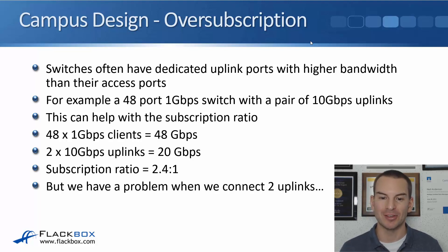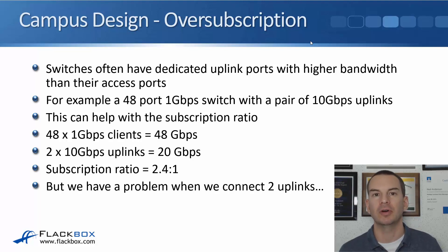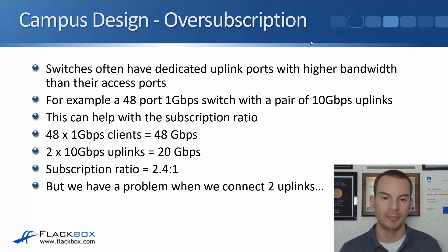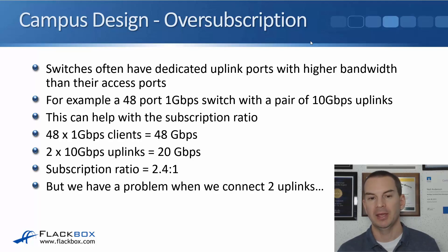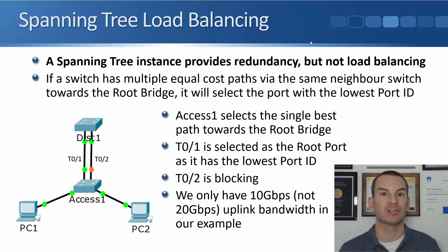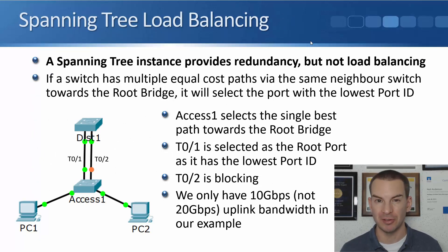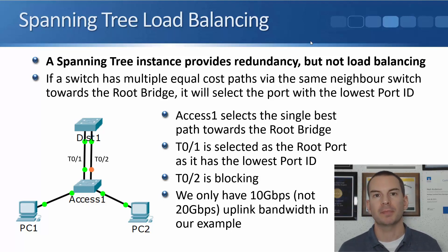Obviously, 24 to 1 is not as good. Normally, when you have switches with higher bandwidth uplinks, oversubscription is not going to be a problem. However, we do have a problem when we want to connect multiple uplinks, and that problem is spanning tree. Spanning tree provides redundancy, but it does not provide load balancing. Spanning tree always selects the one best path to avoid loops.